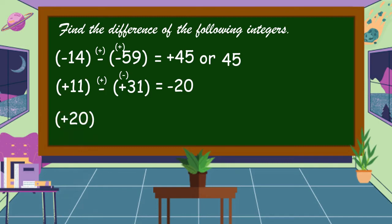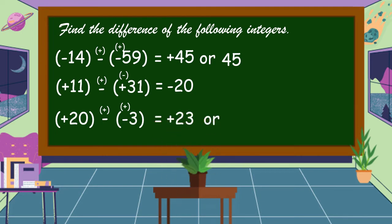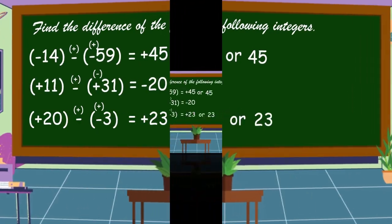Another one: positive 20 minus negative 3. Change the sign of the subtrahend — from negative 3 it becomes positive 3 — then proceed to addition. Positive 20 plus positive 3. The answer is positive 23.